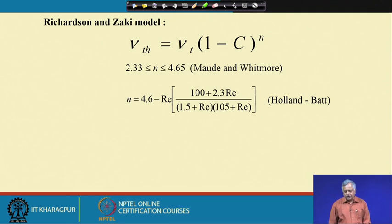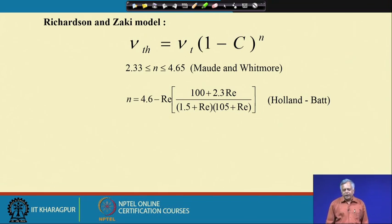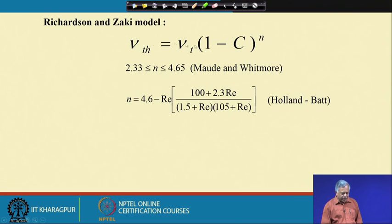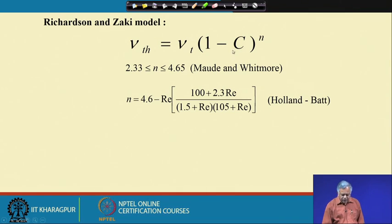To calculate the settling velocity under hindered conditions, we use the Richardson and Zaki model: VTH = VT × (1 − C)^n, where VTH is the hindered terminal settling velocity, VT is the free terminal settling velocity, C is the volumetric concentration of particles, and n is a constant. Volumetric concentration is used because fluid displacement depends on the volume of solids present.